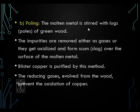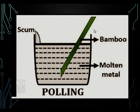The next method is poling. The molten metal is stirred with logs of green wood — you take the molten metal in a big container and stir it with logs of green wood. The impurities are removed either as gases or they get oxidized and form a scum or slag, which is removed from the molten metal. Blister copper is also extracted by this method. The reducing gases evolved from the wood prevent the oxidation of sulphur, and thus impurities are removed as slag while the pure molten metal is separated.